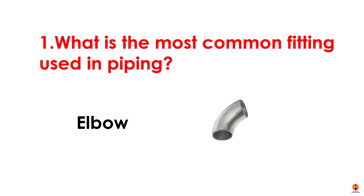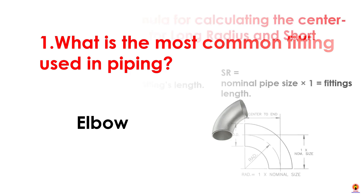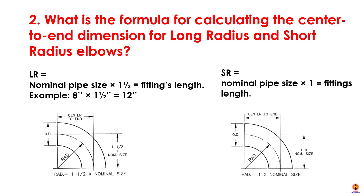Elbow is the most common fitting used in piping. What is the formula for calculating the center-to-end dimension for long radius and short radius elbows? For a long radius elbow, nominal pipe size plus one inch diameter equals the fitting's length — for example, 18-inch plus 1.5-inch diameter equals 12 inches. For a short radius elbow, nominal pipe size plus one inch diameter equals the fitting's length. Please see the picture below.